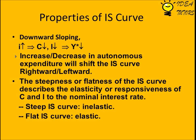The IS curve is downward sloping: as interest increases, investment decreases and thus output decreases. An increase or decrease in autonomous expenditure will shift the IS curve rightward or leftward accordingly. The steepness or flatness of the IS curve describes the elasticity or responsiveness of consumption (C) and investment (I) to the nominal interest rate — a steep IS curve is inelastic, and a flat IS curve is elastic.